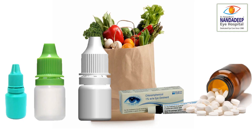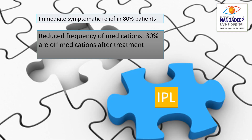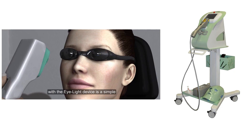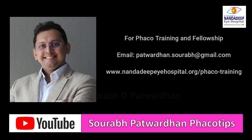We should plan the eye drops, ointments, and different medicines like vitamin D, steroids, lubricating drops, immunomodulators, and also intense pulse light therapy, because it is going to relieve them from symptomatic issues. This is one of the treatments which is really helpful. It is important to treat meibomian gland disease both pre- and post-cataract surgery to have the best kind of outcome.